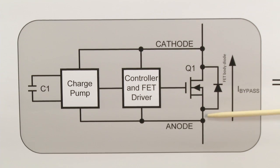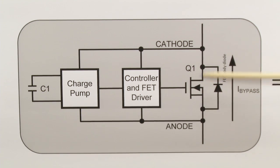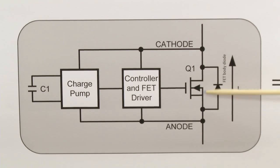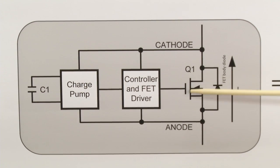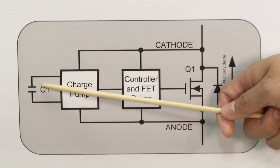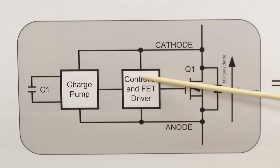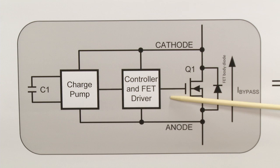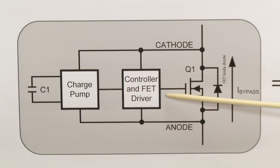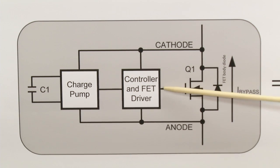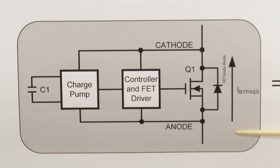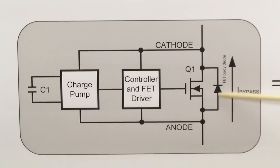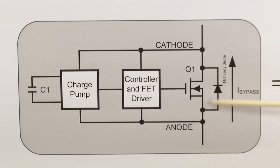Once the MOSFET is on, it creates a low voltage drop across the anode and cathode. This voltage drop will be limited by the RDS-on of the MOSFET. During this time, the capacitor is providing power for the controller and the FET driver. Once the energy in the capacitor has been depleted, the controller will turn off the FET, and the current will flow back into the body diode and the cycle repeats itself.